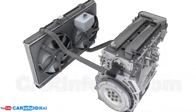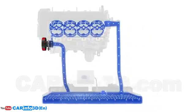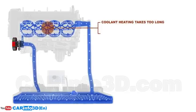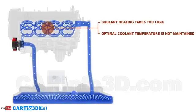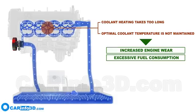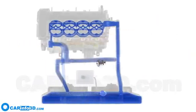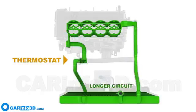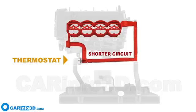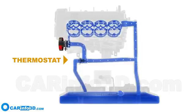This system is already capable of cooling the engine. However, due to the continuous passage through the radiator, it will take a long time to heat the coolant, and maintaining the appropriate working temperature will be a problem. This will result in increased engine wear and excessive fuel consumption. To prevent this, the system is equipped with a thermostat. The thermostat divides the system into two circuits: a longer one that uses the radiator, and a shorter one where the radiator is bypassed. When the coolant temperature is low, it will circulate around the shorter circuit, bypassing the radiator, thus allowing the engine to reach operating temperature more quickly.